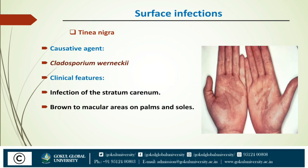The second type of surface infection is tinea nigra. The causative agent of tinea nigra is Cladosporium werneckii. The clinical features are that tinea nigra is an infection of the stratum corneum, presenting as brown to black macular areas on the palm and sole.